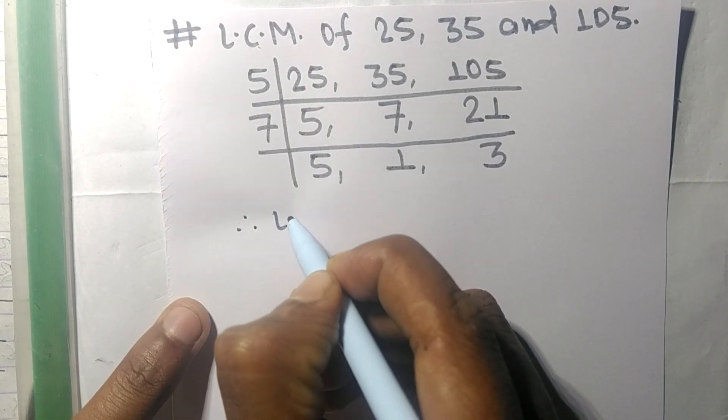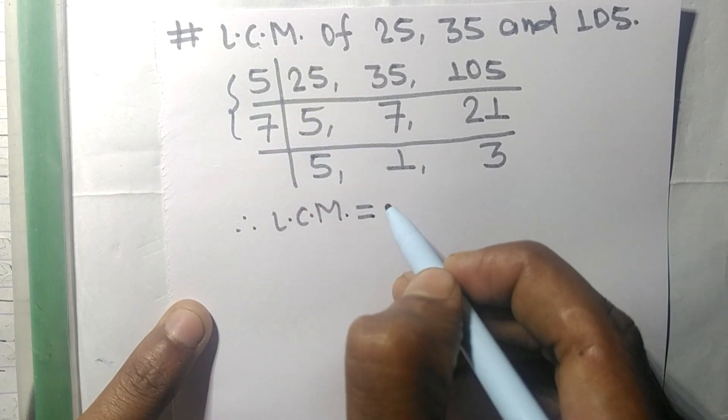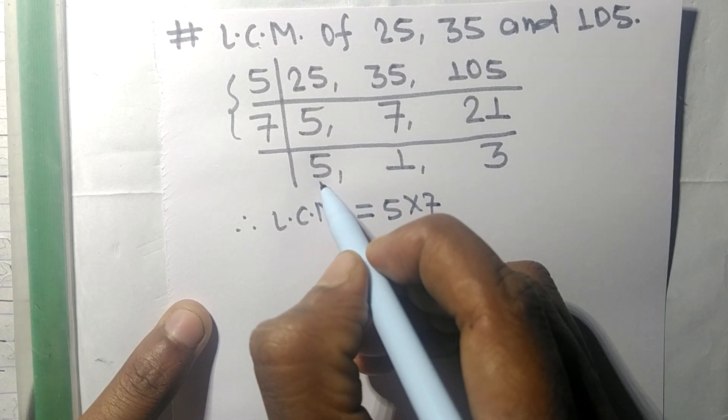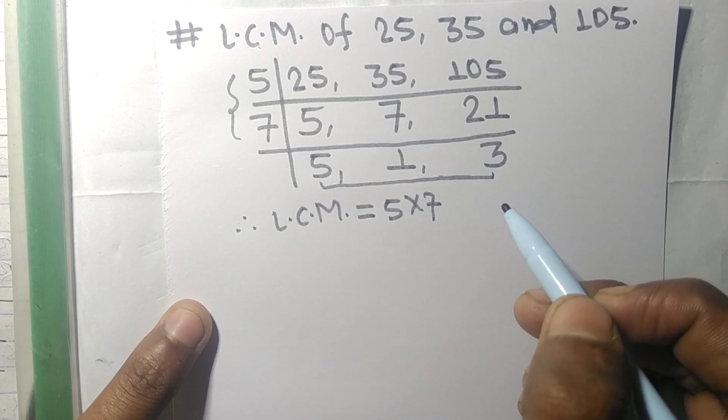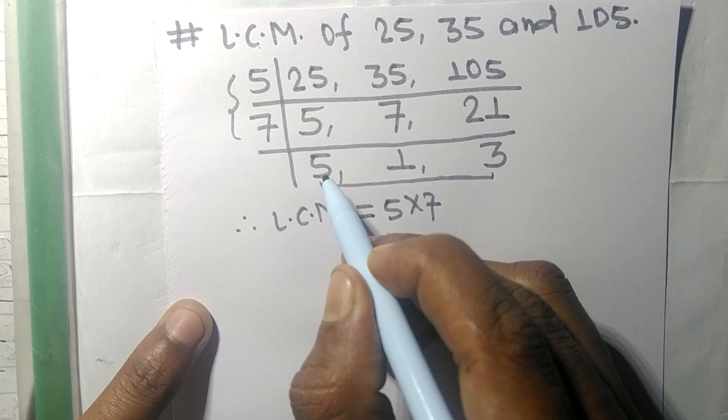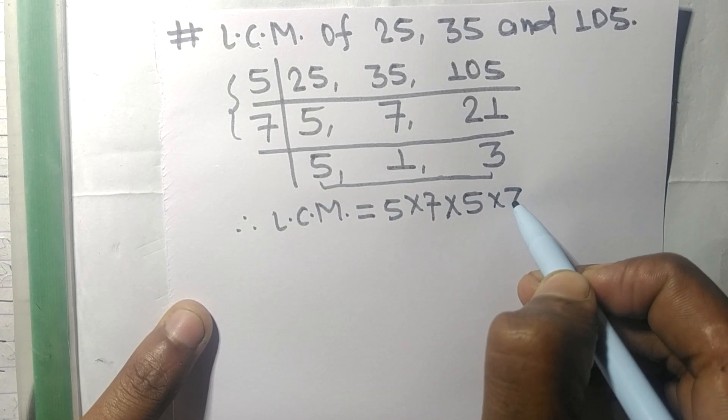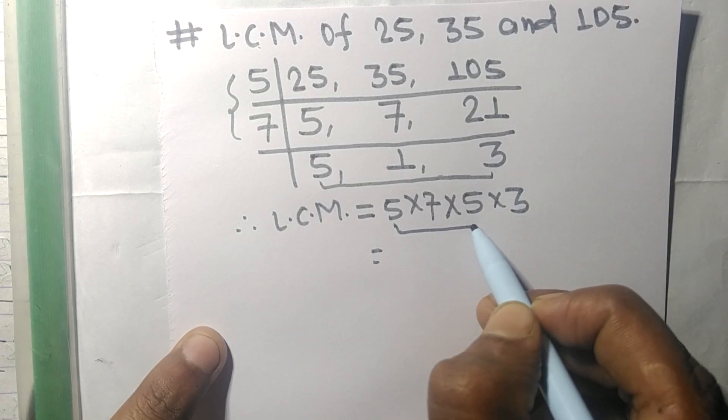Therefore, its LCM is equal to, from this side it is 5 and 7, and from this side we choose the numbers greater than 1, that is 5 and 3. So multiply by 5 and 3. By multiplying all these numbers...